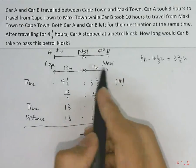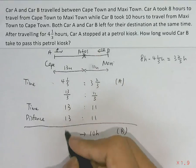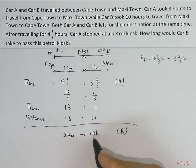To travel how many units of distance? It is 13 units plus 11 units. That will give us 24 units. So 24 units of distance will require 10 hours by car B.